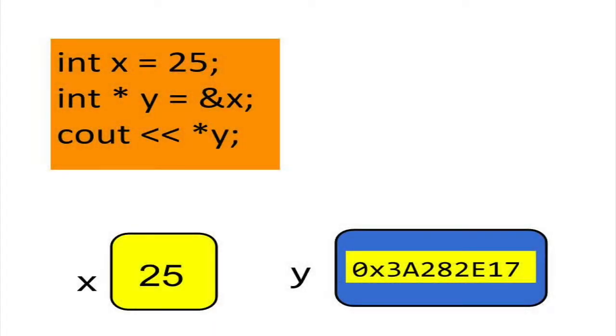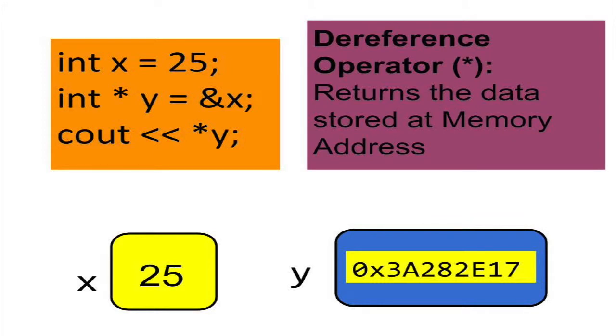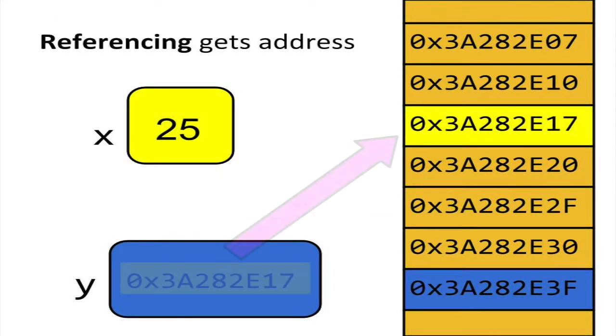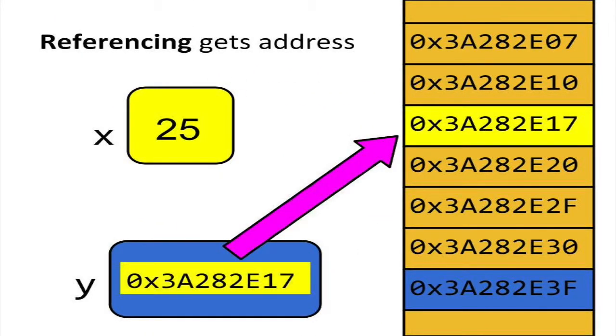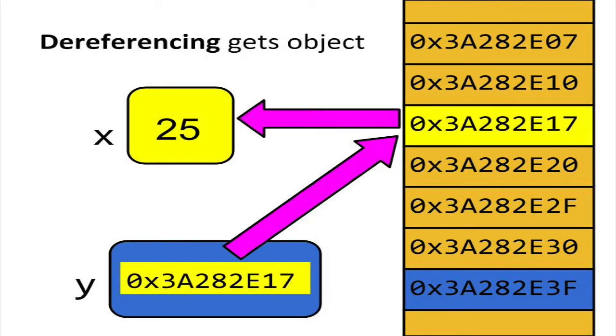Not only can you store the address of another variable in a pointer, you can also access the data stored in this other variable. The asterisk symbol, or dereference operator, lets you view the contents of x indirectly. In summary, referencing returns the address of a variable, while dereferencing returns the actual object stored in that variable.